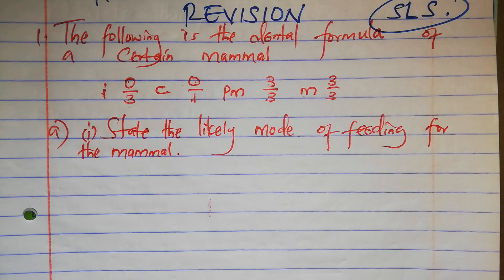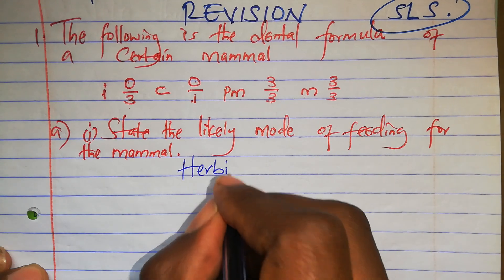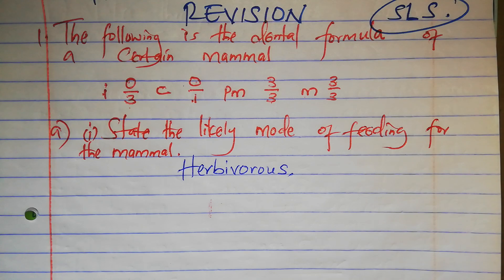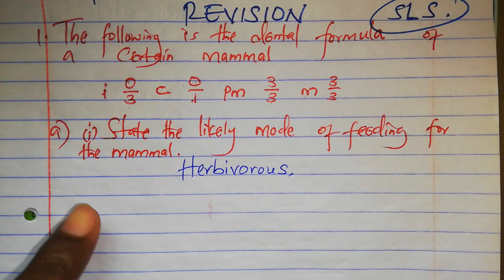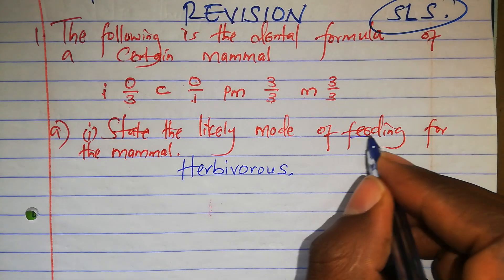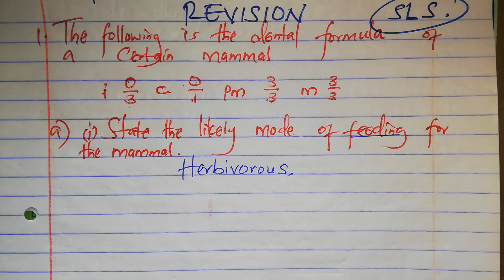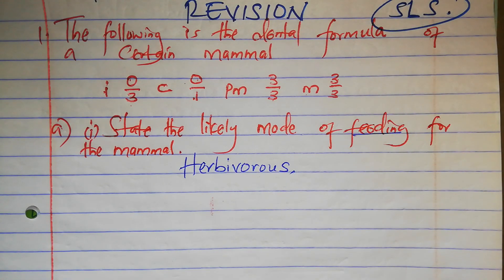State the likely mode of feeding. In modes of nutrition we talked about heterotrophic and autotrophic, but mode of feeding is different. Modes of nutrition are two: heterotrophic and autotrophic. But modes of feeding we have several — herbivores, carnivores, and omnivores. Roman 2: give a reason for your answer.